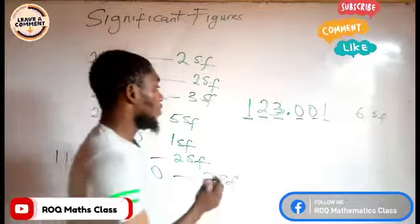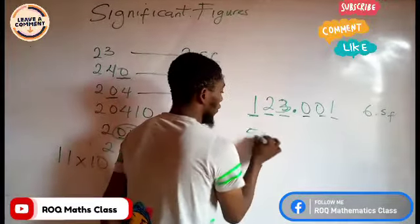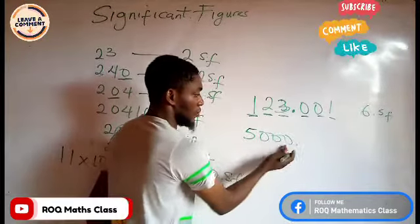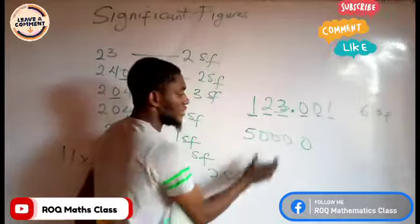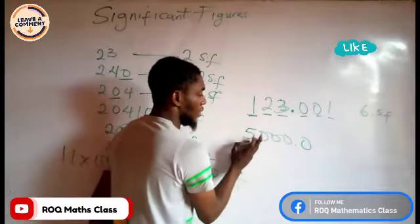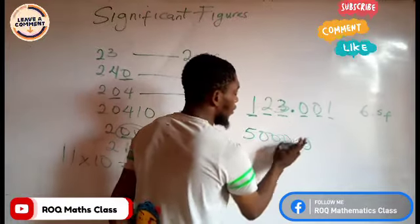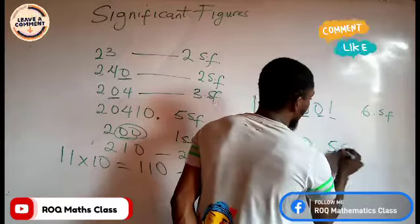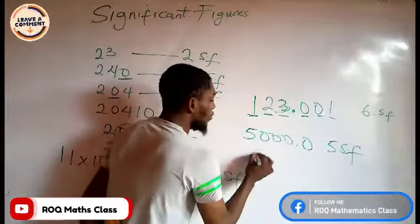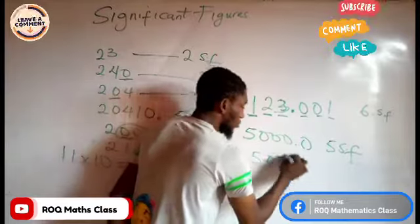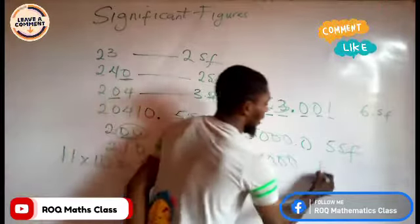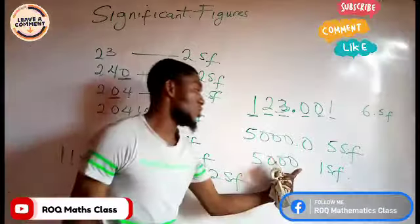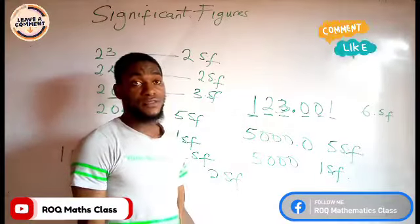Now if I show you 5000.0 — five thousand point zero — you count: one, two, three, four, five. That gives you five significant figures.